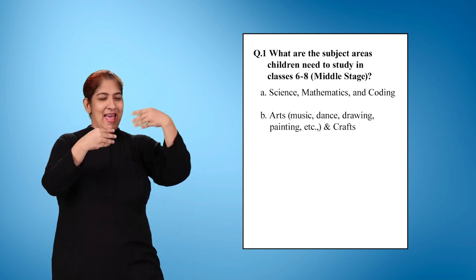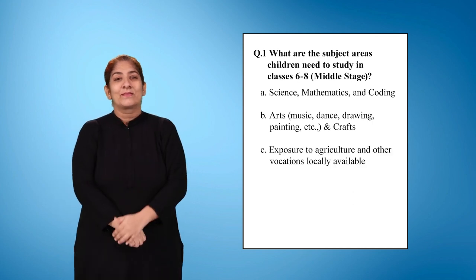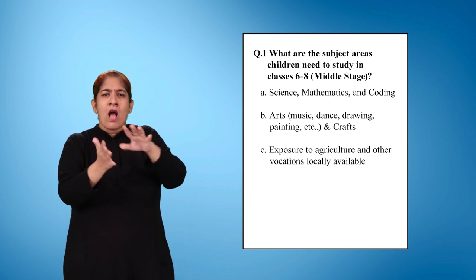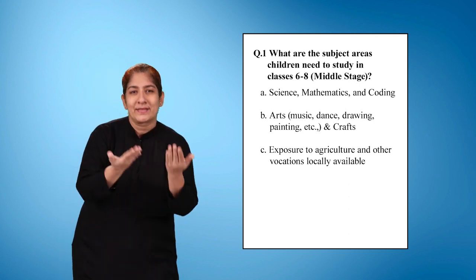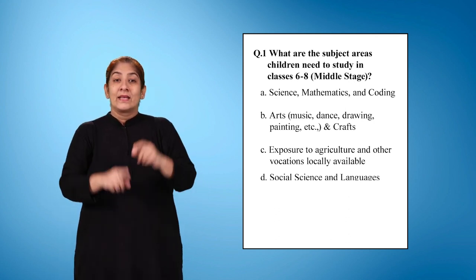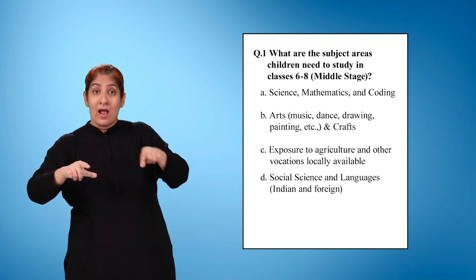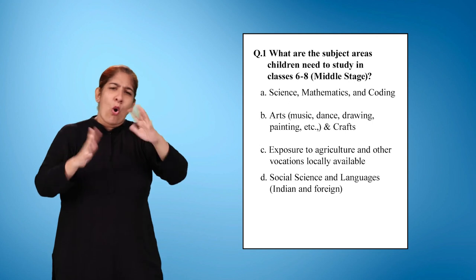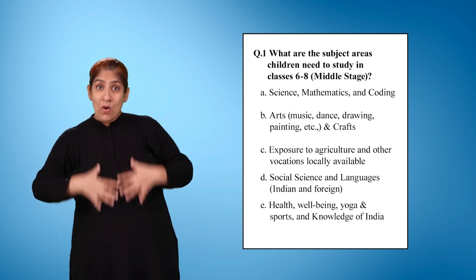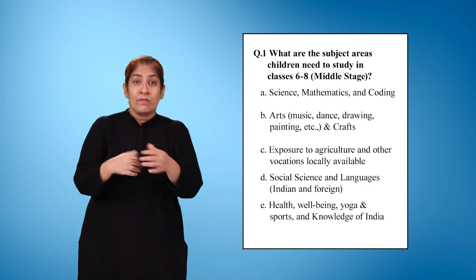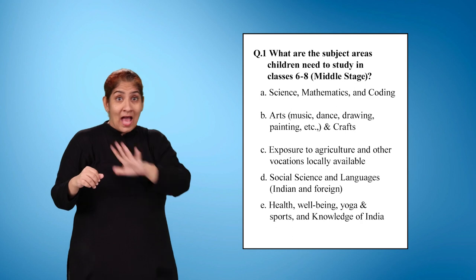and Crafts. Option C: Exposure to Agriculture and Other Vocations Locally Available. Option D: Social Science and Languages, Indian and Foreign. Option E: Health, Well-Being, Yoga and Sports and Knowledge of India.